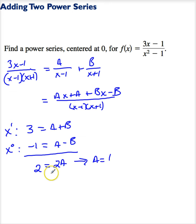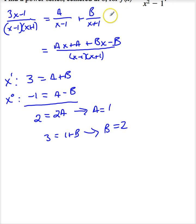And that tells me, it doesn't matter which one of these I plug back in, 3 is equal to 1 plus b. So that tells me b is 2. So that tells me this power series can be rewritten as 1 divided by 1 minus x plus, well it's not power series yet, it's 2 divided by x plus 1. So I can do 2 power series expansions and then add them together.